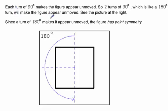And finally, for the second check for the second figure, we notice that we can turn two turns of 90 degrees, which is 180, and it appears unmoved. So a 180 turn makes it appear unmoved, so that means that it does have point symmetry.